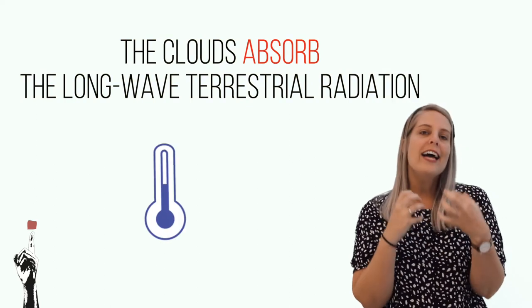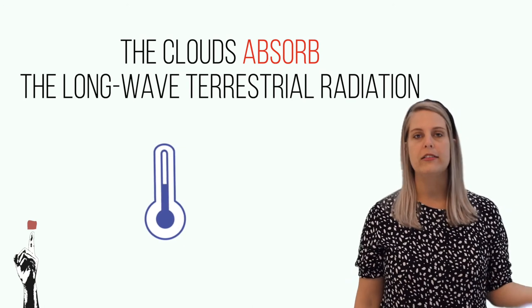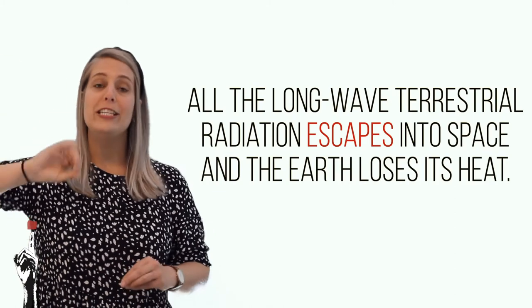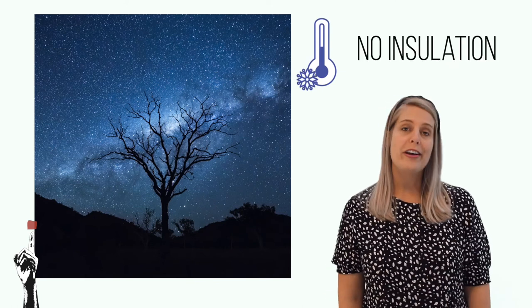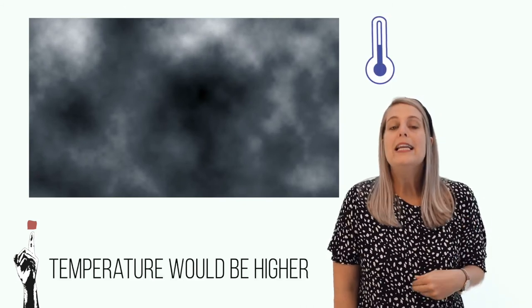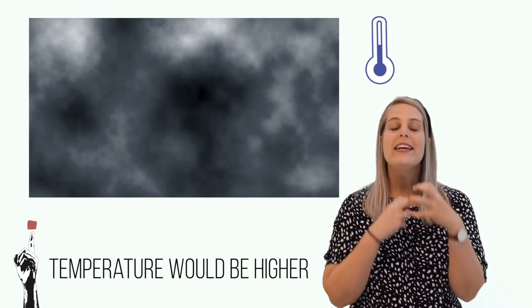If it is cloudy in the morning, the clouds tend to block out the sun and the area remains cool until the clouds eventually lift. If it is cloudy at night, the clouds absorb the long wave terrestrial radiation and actually help to warm up the earth a little. When there are no clouds it tends to be much colder at night, as the long wave terrestrial radiation escapes and all the heat is lost. Think about a cloudless starry night — it's beautiful, you can see the stars and maybe the milky way, but you are guaranteed a very cold chilly night. On a cloudy night you wouldn't see the stars, but the temperature would be warmer as the clouds act as a blanket keeping the heat from the day in.